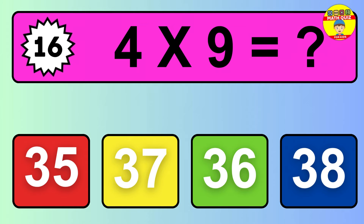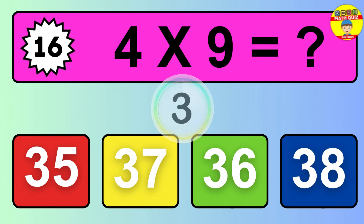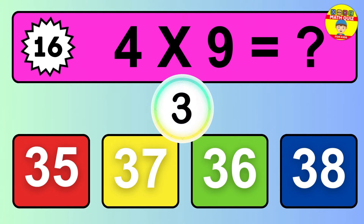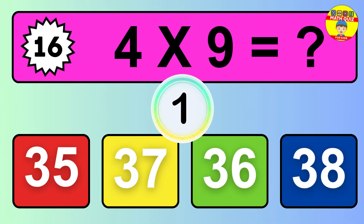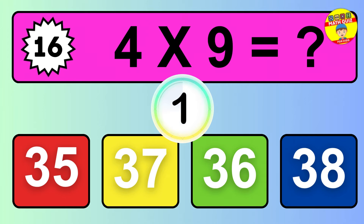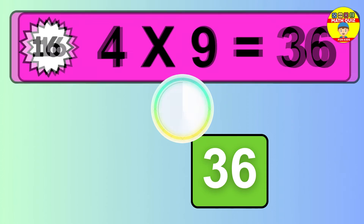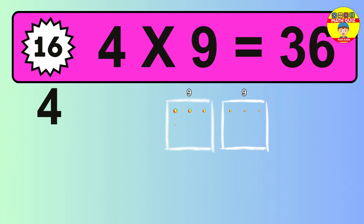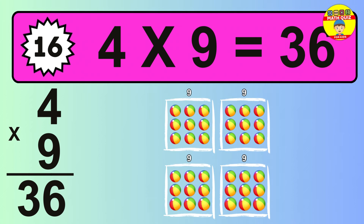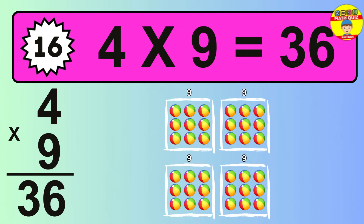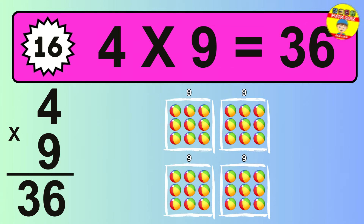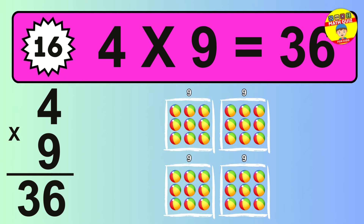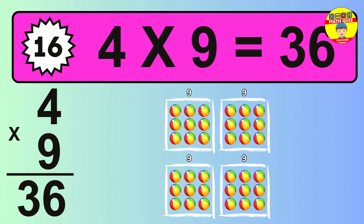Question 16. Four times nine equals what? The answer is four times nine is 36. To calculate, we have four groups with nine balls each one. So, how many balls do we have? We have 36 balls.